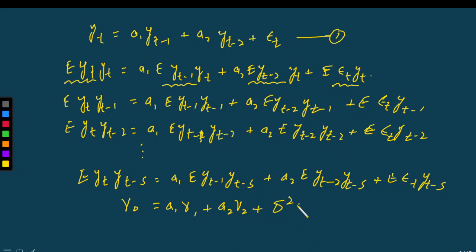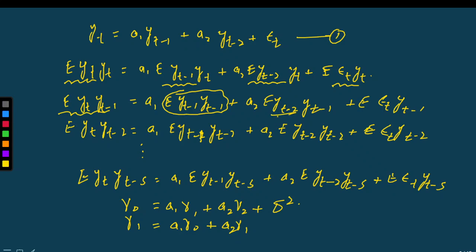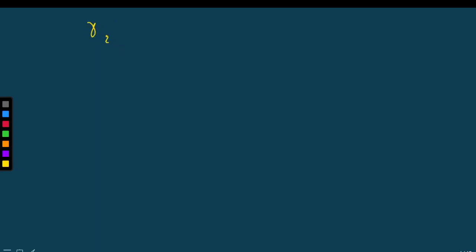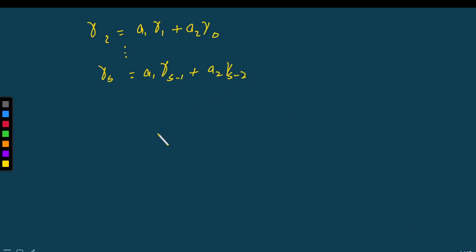The first equation becomes: γ0 = a1·γ1 + a2·γ2 + σ². The second equation gives: γ1 = a1·γ0 + a2·γ1 — here γ0 appears because yt and yt−1 have the same spacing as yt−1 and yt, giving variance. The term E[εt·yt−1] becomes zero. Similarly, γ2 = a1·γ1 + a2·γ0, and in general: γs = a1·γs−1 + a2·γs−2.